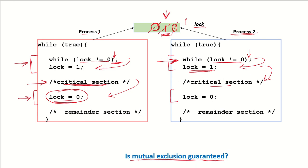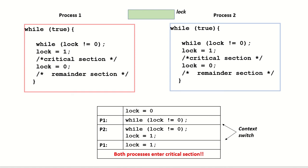But with the use of these acquire and release definitions, is mutual exclusion guaranteed? Do we say that when one process is in the critical section the other process will never be able to enter? Let's see what happens. Here are the same definitions of acquire and release for another process sharing the same critical section.